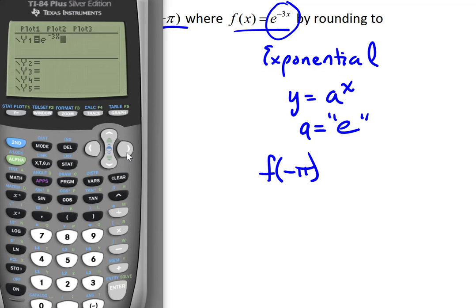Now we want to evaluate that function at negative pi. So let's go ahead and get out of this screen now that it's saved in there as y1, and let's use the calc feature. So we'll hit second calc. The first option says value. That'll allow us to find the value at any given input, and our given input is negative pi.